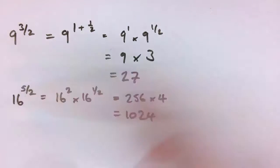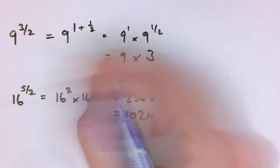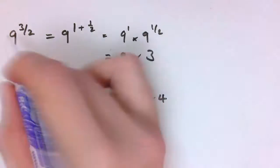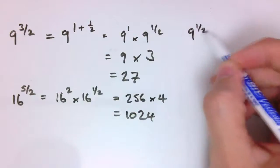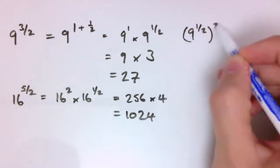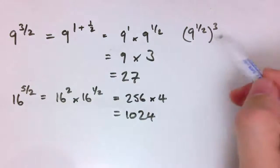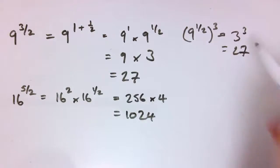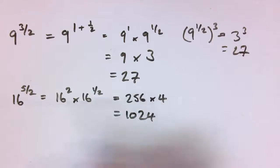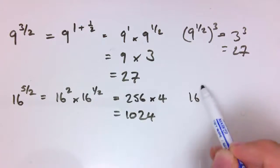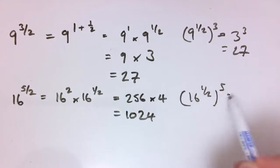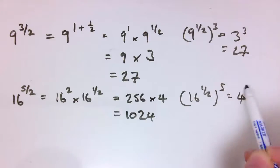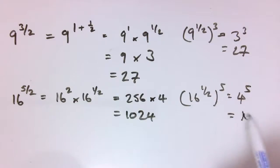You could also get to the same result by saying 9 to the 3 over 2 is 9 to the 1 half cubed by the multiplication rule for indices, which is 3 cubed, which is 27. Similarly, 16 to the 5 over 2 could be written as 16 to the 1 half all to the 5, which is 4 to the 5, and you can check that that's also 1024.